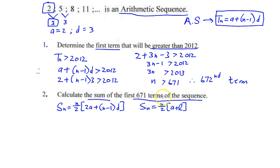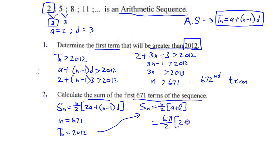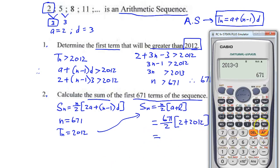If we look carefully, this is linked to the first question. We can see that n is 671, and the 671st term will equal 2012 — so the last term l is 2012. We can use the second formula: S₆₇₁ = 671/2 × (2 + 2012).